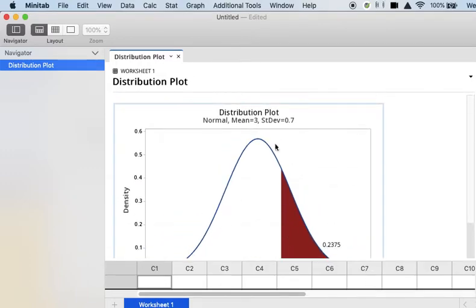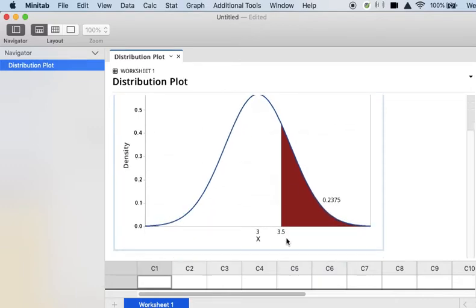Notice I have the mean of 3, the standard deviation of 0.7, and I have 3.5 marked on the X axis and everything to the right of 3.5 is shaded. My probability appears above the shaded area. So in this case, 0.2375 is my answer.